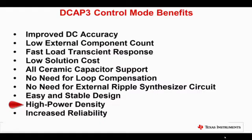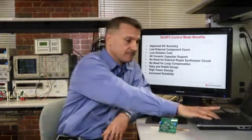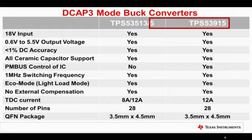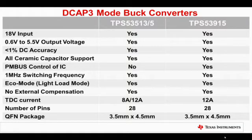The new DCAP3 Control Mode buck converters are the TPS53513 8A and TPS53515 and TPS53915 12A buck converters, all pin-to-pin devices in 3.5 by 4.5 QFN package.